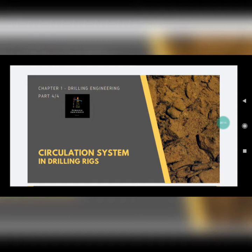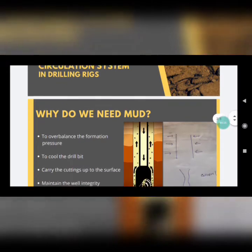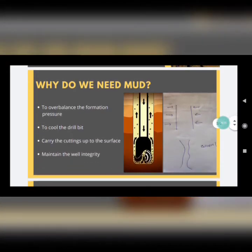The circulation system is used for circulating our mud. But why do we need mud? Let's see the functions of drilling mud. The first and very important function is that drilling mud is used to overbalance the formation pressure.